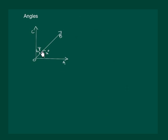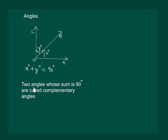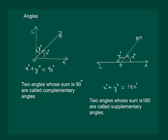Two angles whose sum is 90 degrees are complementary angles. Two angles whose sum is 180 degrees are called supplementary angles. So, angle X and angle Y are supplementary angles.